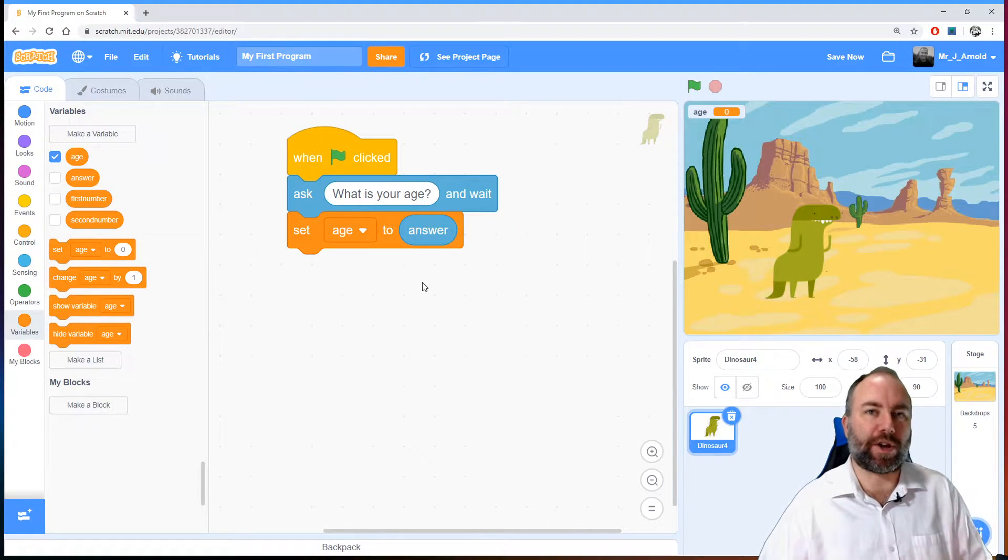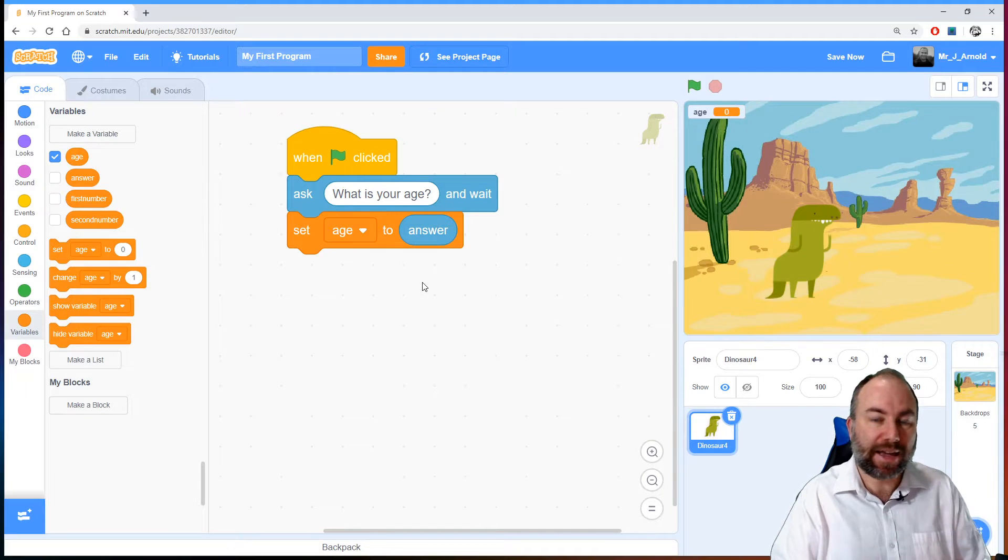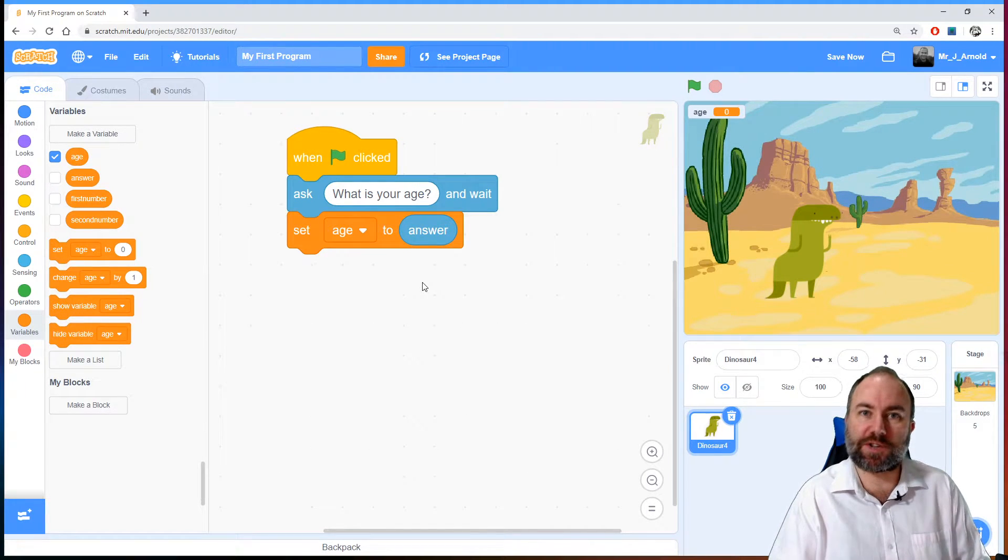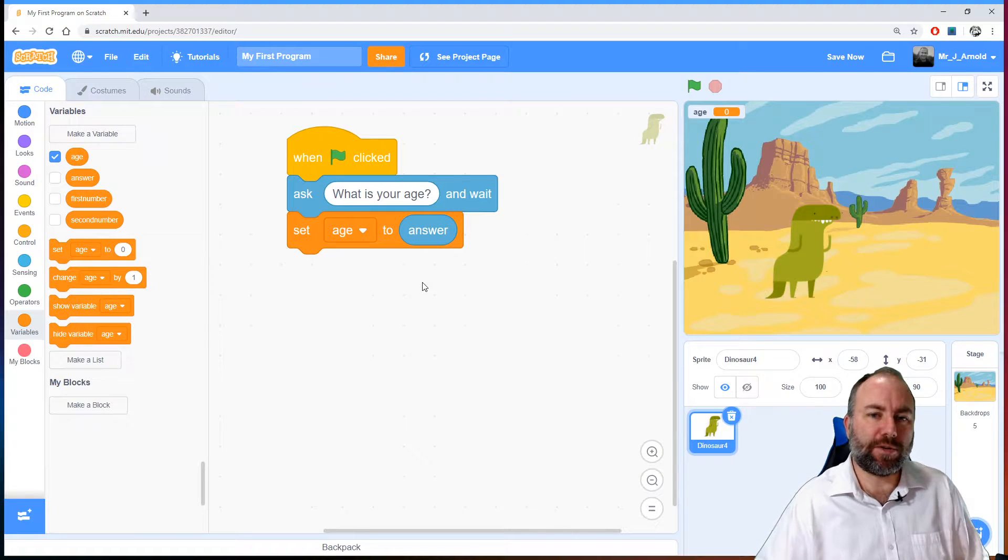Now at this point we have their age but we don't know whether to tell them they're old or tell them they're young. So we need the computer to be able to ask that question. If the number that they've given us is more than a particular value then we will tell them they're old. Otherwise if the number is less than a value we decide, we'll tell them they're still young.